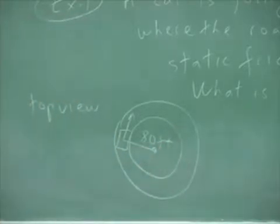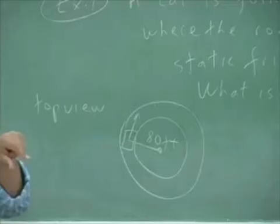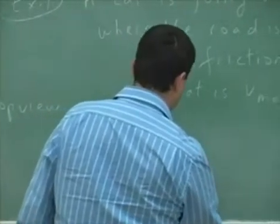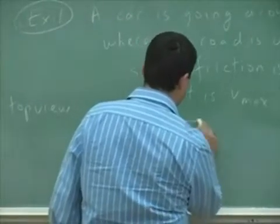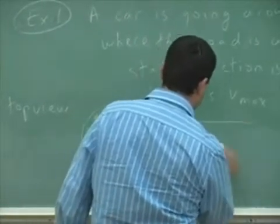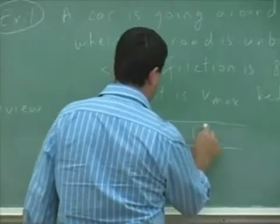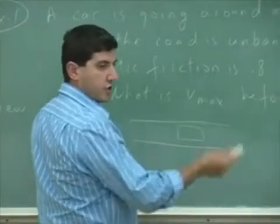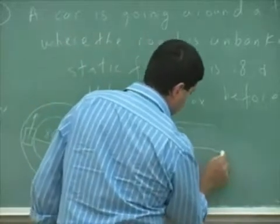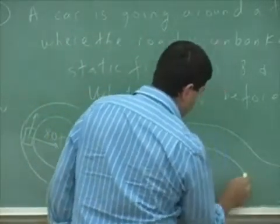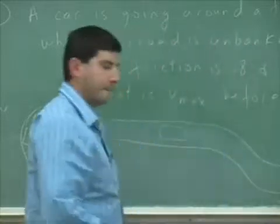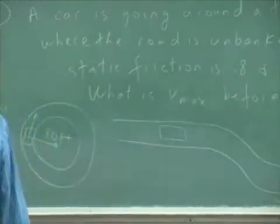Now the thing is, it doesn't even have to necessarily be a complete circle. It could be a portion of a circle. Let's say the car is going straight, and at the end of the road, there's a portion of the road where it's curved, like that, and then it straightens out.